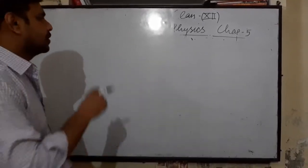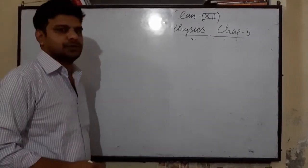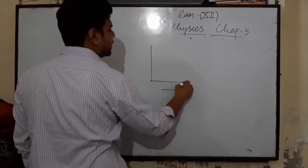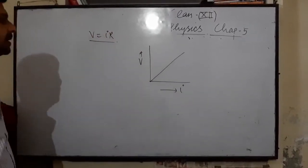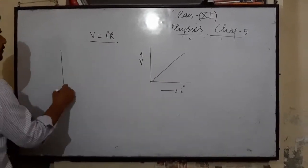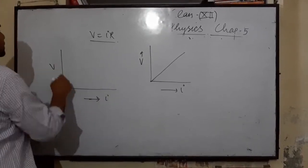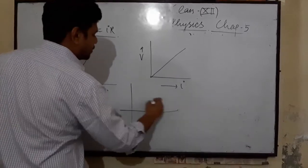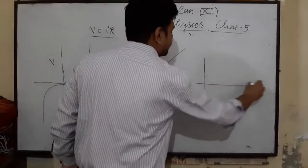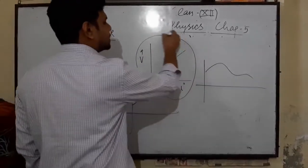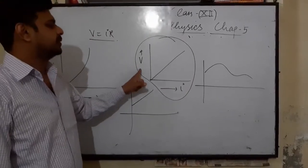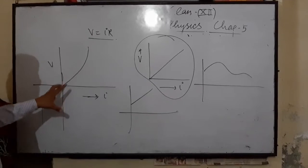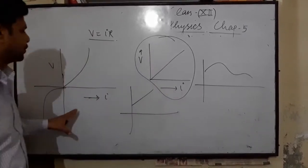Now, regarding Ohm's law — there are two conditions for this law to be obeyed. If we plot a graph between I and V, it must be a straight line passing through the origin. If a graph for any conductor gives a straight line through the origin, that conductor obeys Ohm's law. Conductors whose I-V graphs are not straight lines through the origin do not obey Ohm's law.